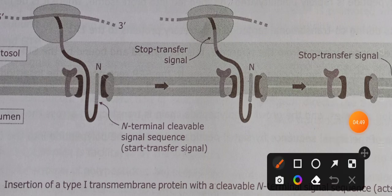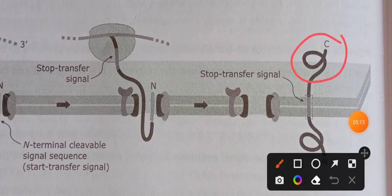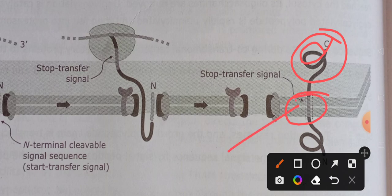Translocation continues until the stop-transfer signal sequence arrives. Once the stop-transfer sequence enters the translocon, it halts translocation. The ribosome continues synthesizing the protein, so the C-terminal portion loops out at the cytosolic side. The stop-transfer signal remains embedded in the lipid bilayer, and after complete synthesis there is lateral movement embedding the protein in the ER membrane.